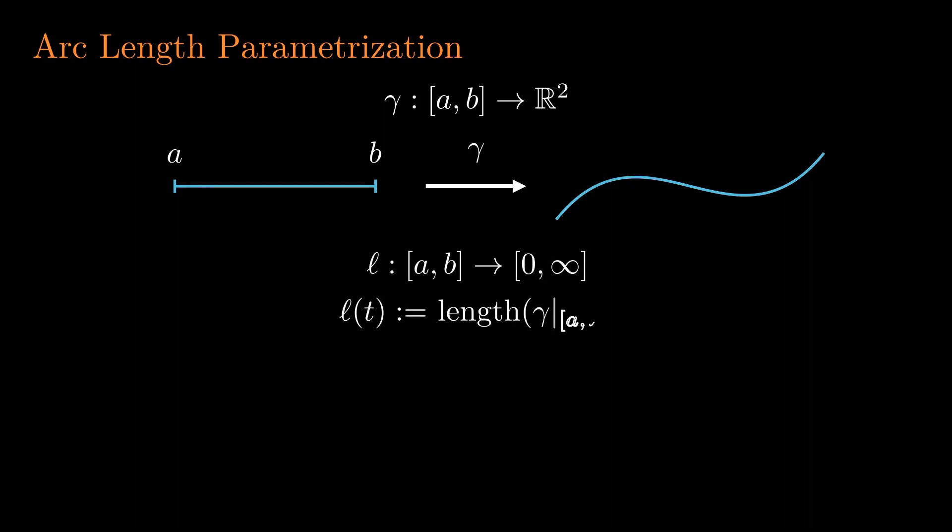Let's finish this lesson with the concepts of length function and arc length parametrization. When we have a curve γ with domain [a,b], we always have its length function ℓ. The length function is a real function with the same domain as the curve, and for each time t, ℓ(t) is defined as the length of γ restricted to the interval [a,t]. Physically, this means how much has the particle traveled since the initial time until time t. By this interpretation, it should be clear that the length function evaluated at the initial time is zero since the particle hasn't traveled at all, and evaluated at the final time is the total length of the curve by definition.